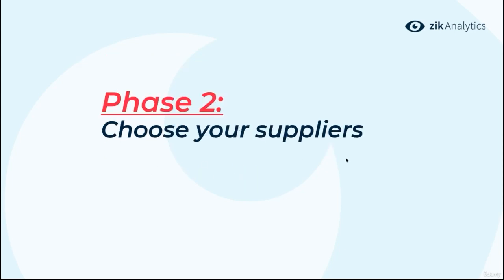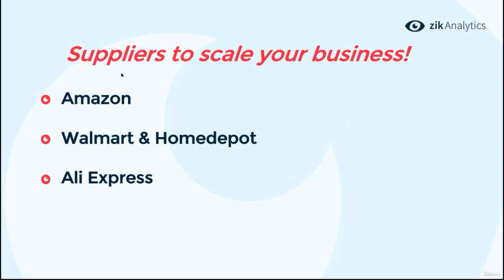Phase two: choose your suppliers. In phase one, we took you hand by hand and showed you exactly what to do. Now you've grown up — you managed to generate your first 100 sales, and you can make your own decisions on which suppliers and strategies to use. We've given you four supplier recommendations for scaling your business.